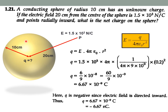In the first problem, there is a sphere of radius 10 centimeters with a charge inside that we have to find. This charge produces an electric field everywhere radially, but in the problem it is given that the electric field points radially inward, which means the charge should be negative, from the properties of electric field lines. This charge produces an electric field of 1.5 × 10³ N/C at point P, which is 20 centimeters away from the center of the sphere.